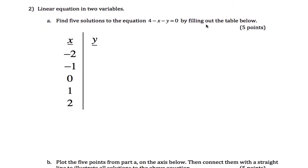Second problem: find 5 solutions to this equation by filling out the table below. I think the easiest way to do this is to isolate y. Instead of 4 minus x minus y equals 0, if we add y to both sides, we get 4 minus x is equal to y, or y equals 4 minus x.